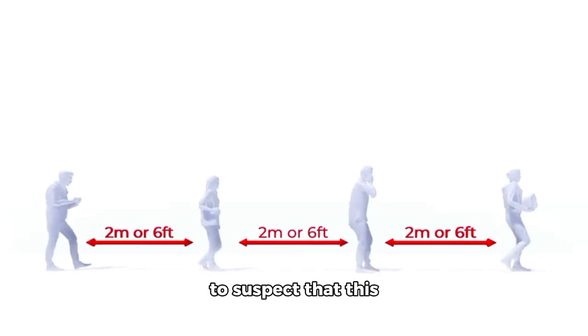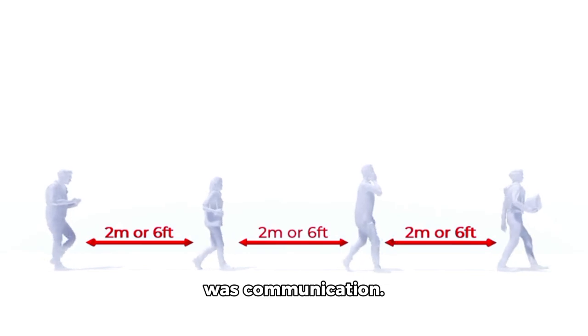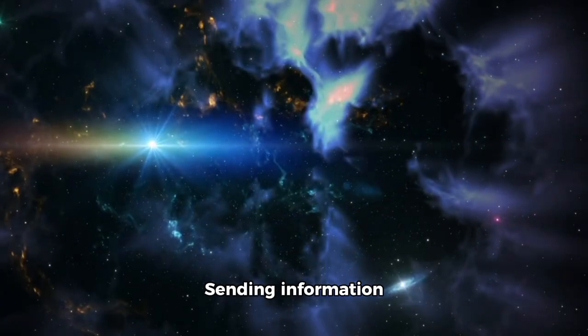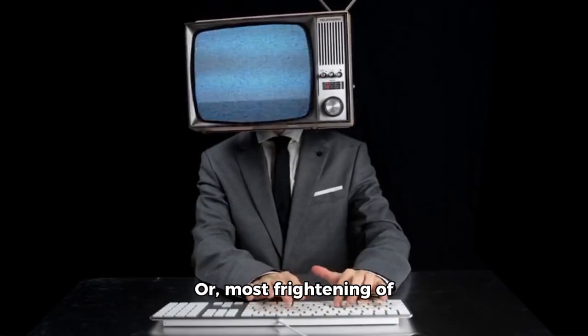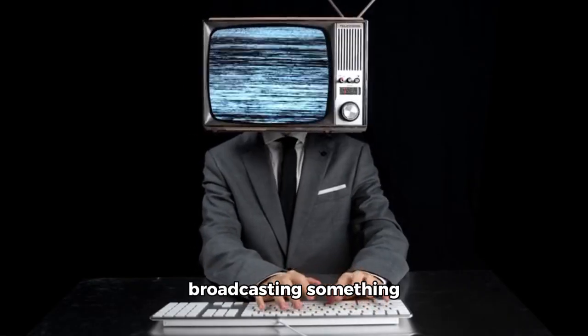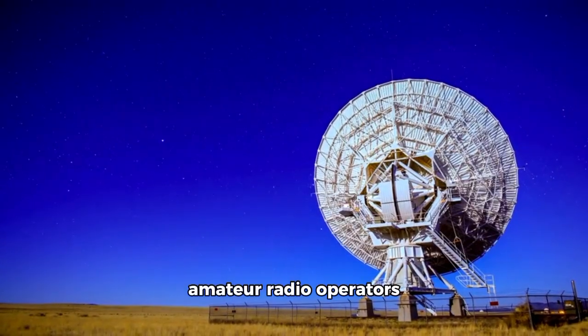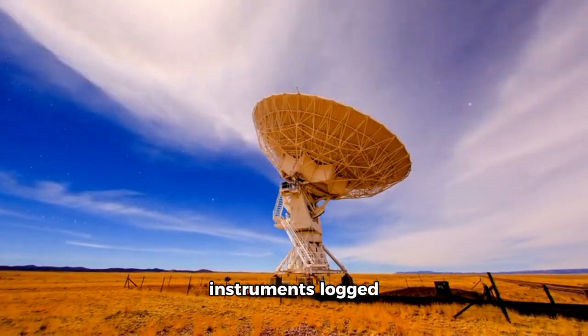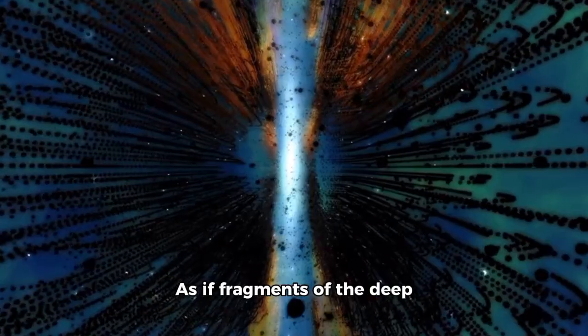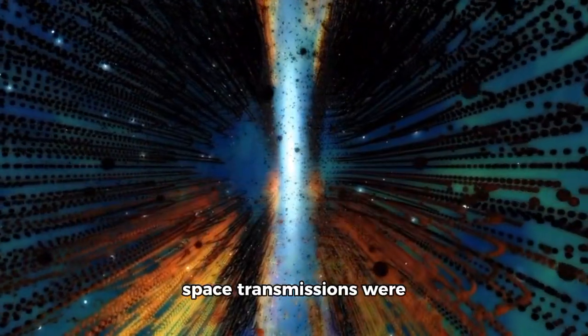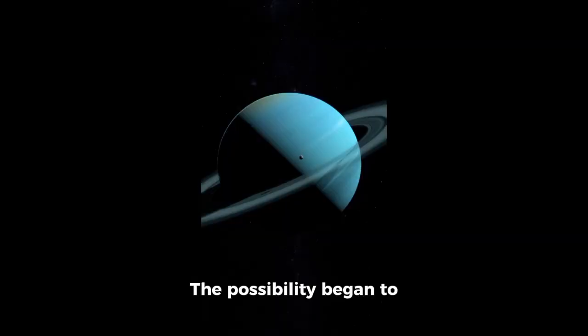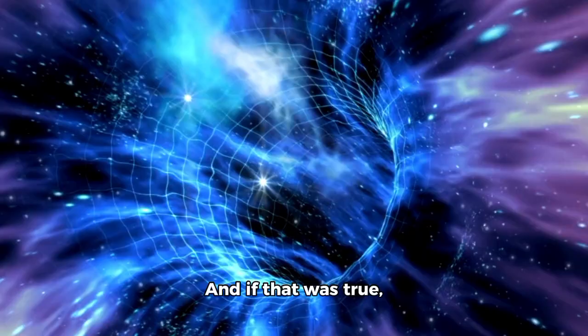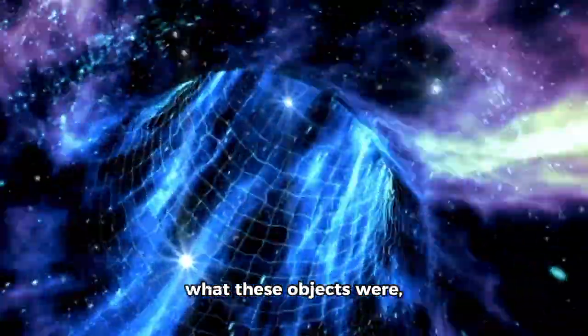Some researchers began to suspect that this wasn't just motion, it was communication. Were they communicating with one another, sending information to another place, or, most frightening of all, were they broadcasting something meant to be intercepted? Still more intriguing, amateur radio operators on Earth began reporting strange, faint signals at the same times Voyager's instruments logged their strongest readings, as if fragments of the deep space transmissions were bleeding into our atmosphere. The possibility began to emerge that Voyager 2 had not just observed this formation, it had become part of it.